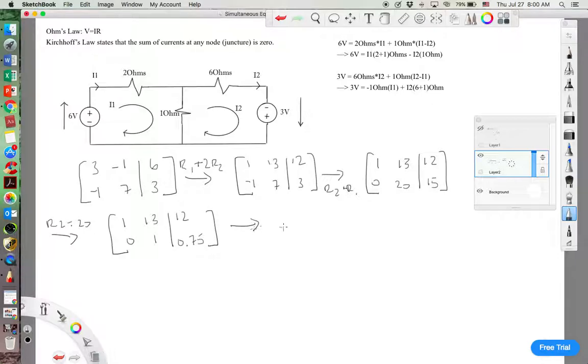And finally, R1 minus R2, 1, 0, 0, 1, there's our identity matrix. We get 2.25 and 0.75.